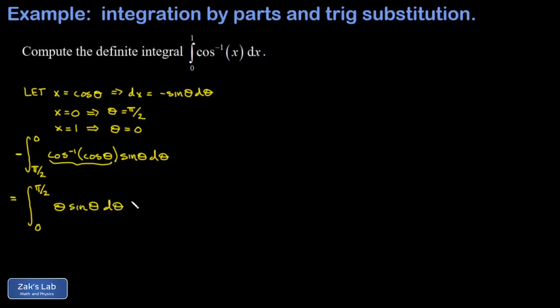And this is a classic integration by parts integral. In the integration by parts we let u equal theta. And the whole point of that is that the derivative of u becomes a simpler thing. So my differential du is just equal to d theta.